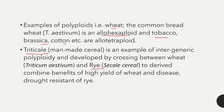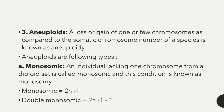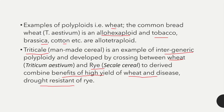An important example is triticale, a combination of wheat (Triticum aestivum) and rye (Secale cereale). An intergeneric cross occurs between wheat and rye to derive the combined effect of both — the high yield of wheat and the disease and drought resistance of rye. Intergeneric cross means a cross between two different genera but belonging to the same family. Both wheat and rye belong to the same family.